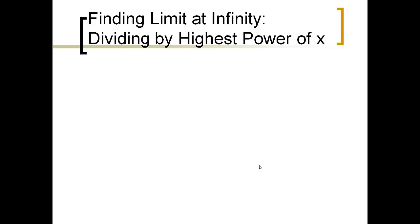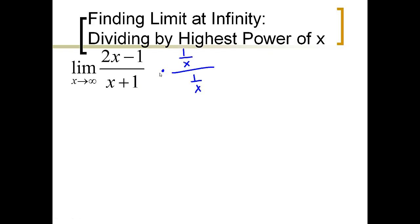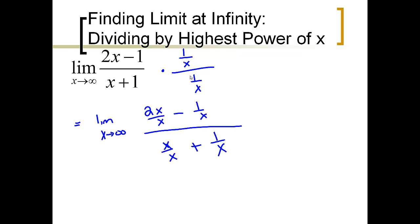One way to analytically find limits of rational functions as x approaches infinity is by dividing by the highest power of x. Here, x is to the first power in both the numerator and denominator, so let's divide every term by x — or equivalently, multiply by 1 over x. When we do that, the 2x term divided by x gives us 2 minus 1 over x in the numerator, and x over x plus 1 over x in the denominator. Now we can evaluate each of those subparts individually.